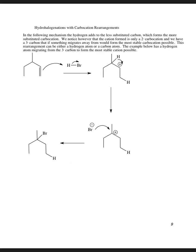If we don't form the most stable cation at the beginning — for example, starting with 3-methyl-1-pentene and adding HBr — the first thing that happens is the pi bond grabs a hydrogen, putting it on the less substituted carbon to form a secondary cation. That secondary cation can have a hydrogen rearrange to form a tertiary cation. Then bromide adds to give 3-bromo-3-methylpentane. Because the secondary cation isn't as stable as the tertiary cation, it easily rearranges — this will always happen.